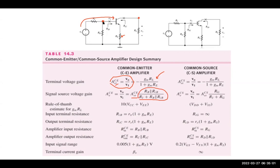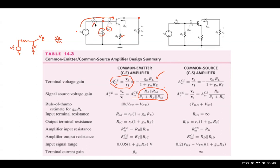The resistive divider: if you have a voltage, a resistor, and another resistor, with v_input at the top and v_base at the junction, then v_base over v_input is simply RB·RIB divided by the total resistance, which is RB parallel RIB plus RL.